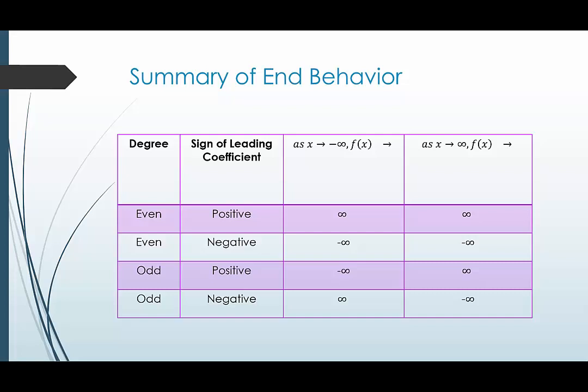A degree that's even and a leading coefficient that's positive goes up in both directions. If the degree is even and the leading coefficient is negative, the graph goes down in both directions. If the degree is odd and the leading coefficient is positive, as x gets smaller y gets smaller, and as x gets bigger y gets bigger. If the degree is odd and the leading coefficient is negative, as x gets smaller y gets bigger, and as x gets bigger y gets smaller.